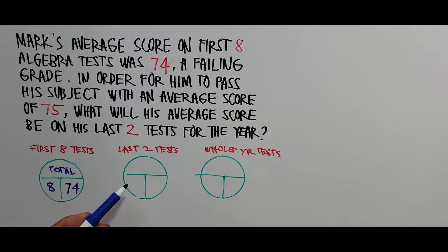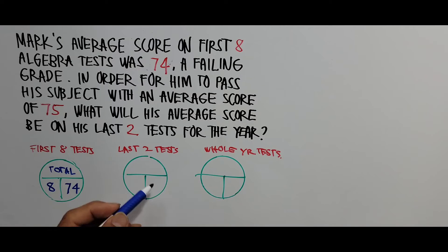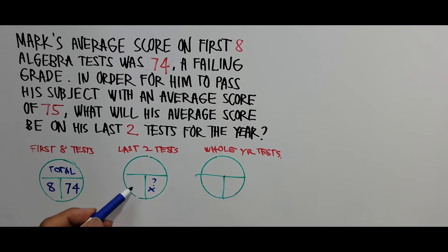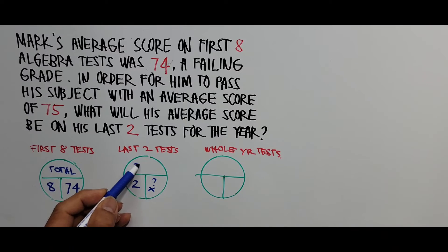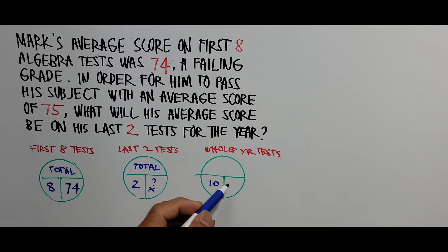For the last two tests, we need to find the average score — we don't know it yet, so we indicate that as x. The number of tests is two, and we'll find the total for that pie as well. For the whole year, there are 10 tests total. The problem states he must achieve an average of 75 to pass, so the bottom-right of the third pie is 75.